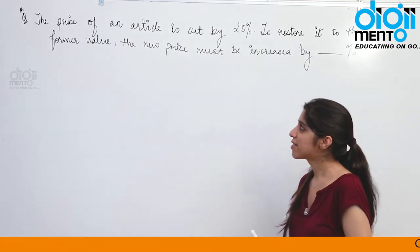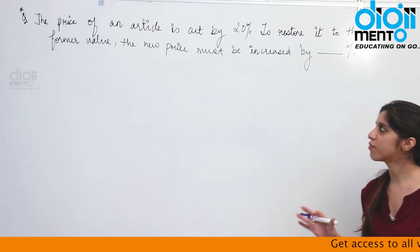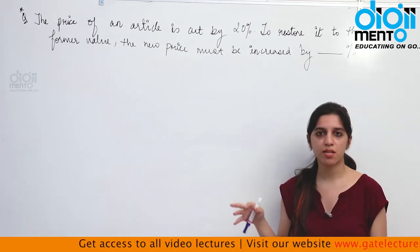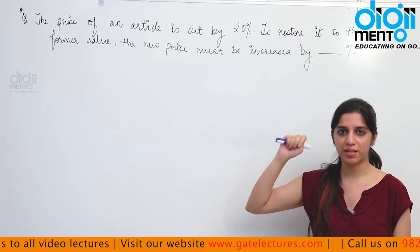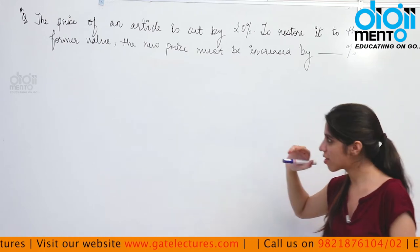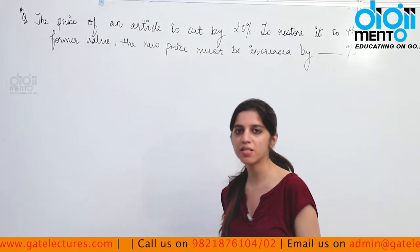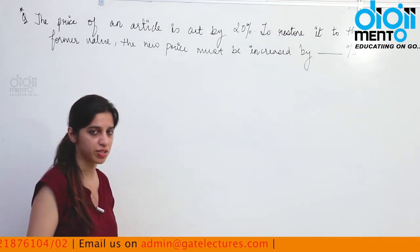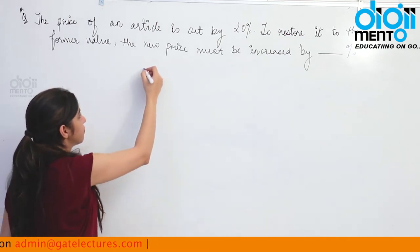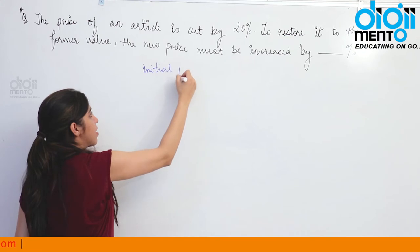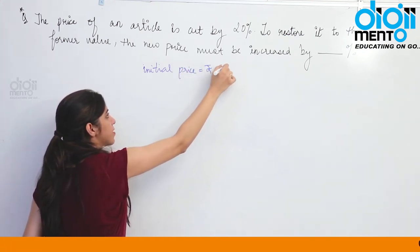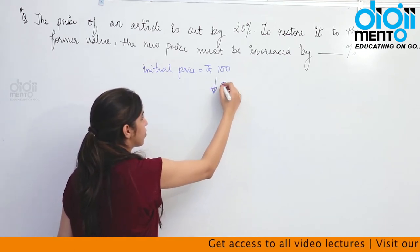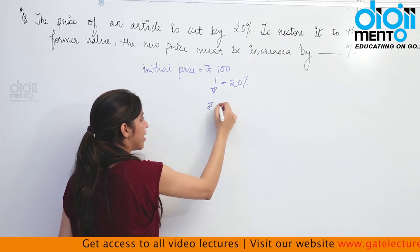Now look at the next question. They say the price of an article was cut by 20 percent, but then they needed to restore it to its original value. They are asking how much percent should the new price be increased. Since everything is given and asked in percentages, we assume the initial price was 100 rupees. When it was cut down by 20 percent, the price would have become 80 rupees.